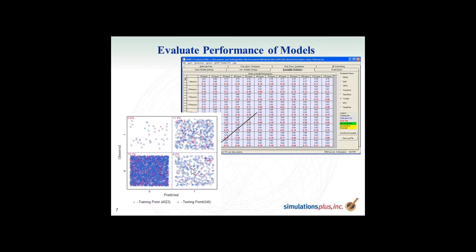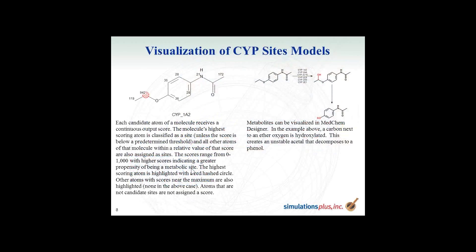We have looked at compounds where we predicted a site of metabolism but it wasn't experimentally observed in the literature, and then later a publication came out indicating it was a site of metabolism — so we've converted false positives into true positives. You enter your compound into AdMet Predictor and it produces the sites of metabolism. If the substrate model indicates a compound is not a substrate for 1A2, we display the site in a gray mesh instead of red. Our models work together: first we predict if it's a substrate, then if it is, we color the sphere red.